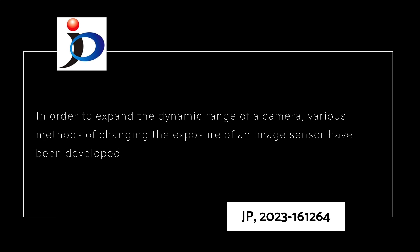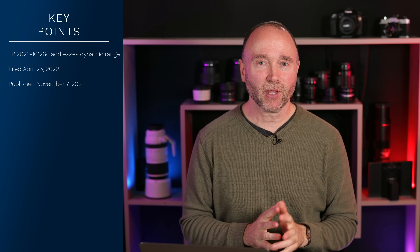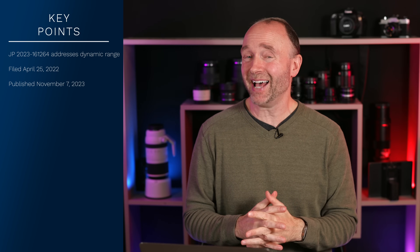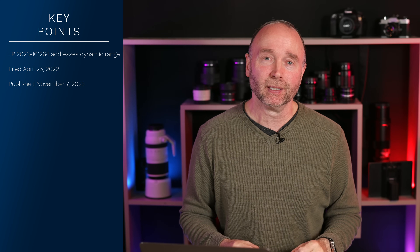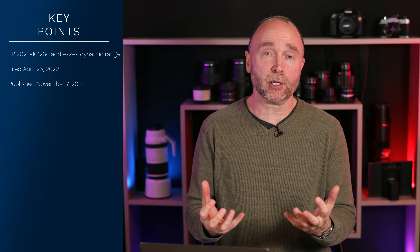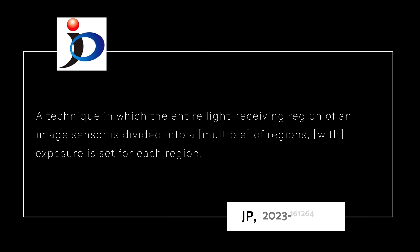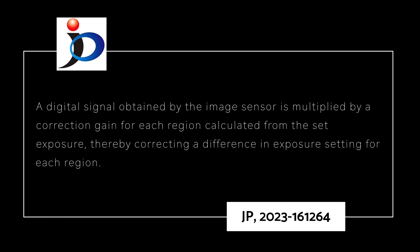In order to expand the dynamic range of a camera, various methods of changing the exposure of an image sensor have been developed. Canon states that to increase dynamic range, a technique in which the entire light receiving region of an image sensor is divided into multiple regions with exposure set for each region. A digital signal obtained by an image sensor is multiplied by a correction gain for each region calculated from a set exposure, thereby correcting the difference in exposure setting for each region and thus increasing dynamic range.